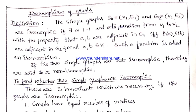Before I explain what the isomorphism of graphs is, I would like to tell you the importance of the topic. In some areas of science and technology, we come across questions like whether it is possible to draw two graphs in a similar way, or whether it is possible that two graphs have the same structure. To answer such questions, we can say yes, if the graphs are isomorphic — they can possess the same structure and so can be drawn in the same way. Therefore, learning the concept of isomorphism of graphs is essential for determining whether graphs can have the same structure or not.